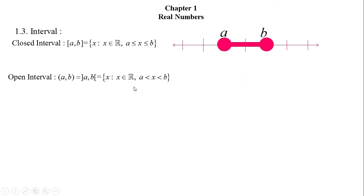Similarly, the set of all real numbers between A and B, excluding A and B, is known as the open interval of A and B. In some books it is denoted by the first bracket, and in some books it is expressed by the inverse square bracket. It is defined as: X such that X belongs to R and A less than X less than B.